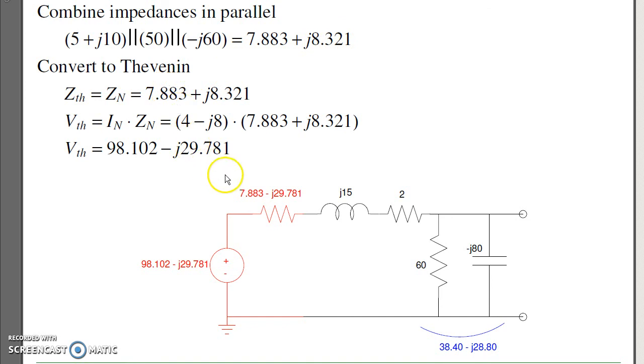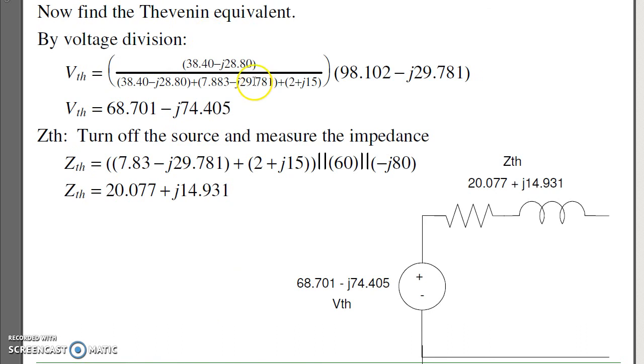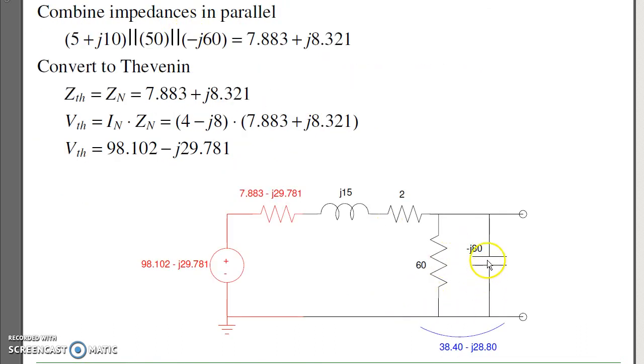The Thevenin resistance is the same. The Thevenin voltage is I times R. It becomes 98 minus j29 ohms. These now add in series. These I can put in parallel as 38 minus j28 ohms. Then by voltage division. This is what I'm measuring. 38 plus j28 over the total times the voltage. That's the Thevenin voltage.